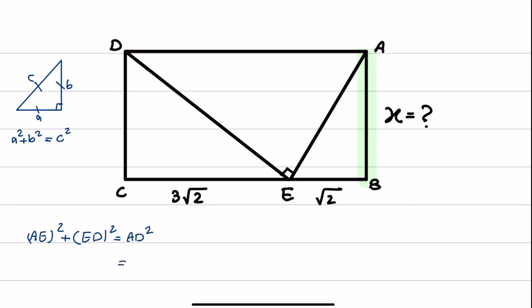As I mentioned, AD squared is 3 times square root of 2 plus square root of 2, squared. And this is equal to 4 times square root of 2, and this is equal to 32.